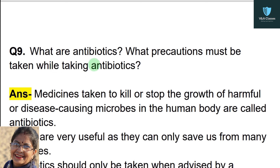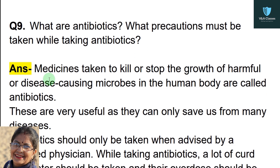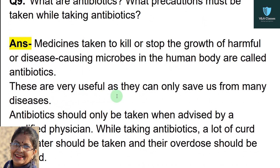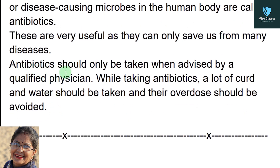Question number 9: what are antibiotics? What precautions must be taken while taking antibiotics? Answer: medicines taken to kill or stop the growth of harmful or disease-causing microbes in the human body are called antibiotics. These are very useful as they can save us from many diseases. Antibiotics should only be taken when advised by a qualified physician, a lot of care and water should be taken, and their overdose should be avoided.